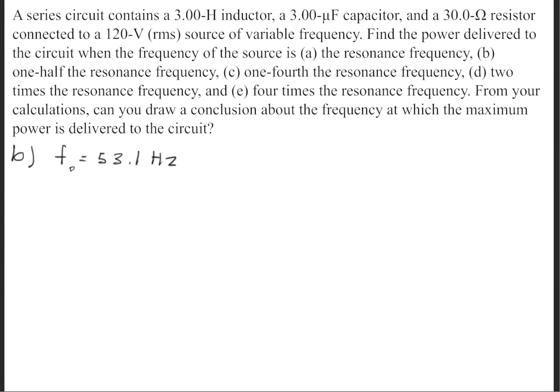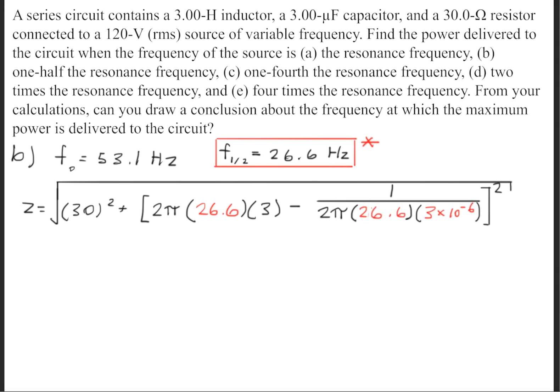For part B, it's asking what happens when you have one-half the resonant frequency. So half of the resonant frequency will be 26.6 Hertz. Next, we'll plug it back into the impedance formula.